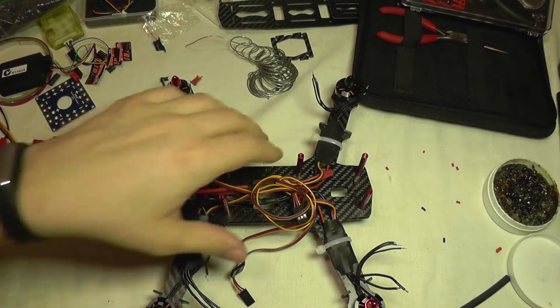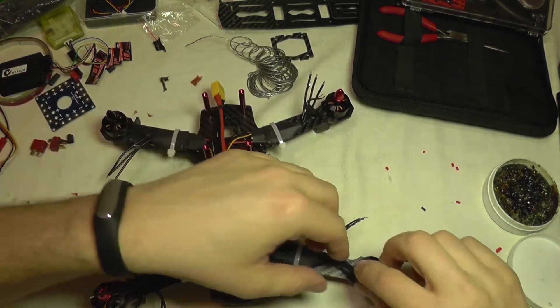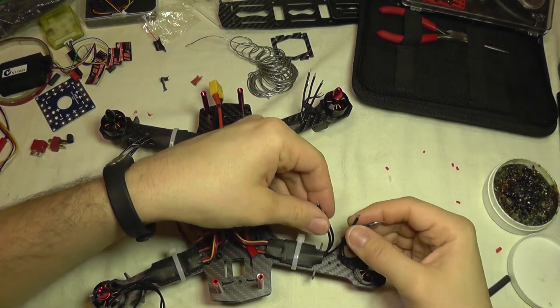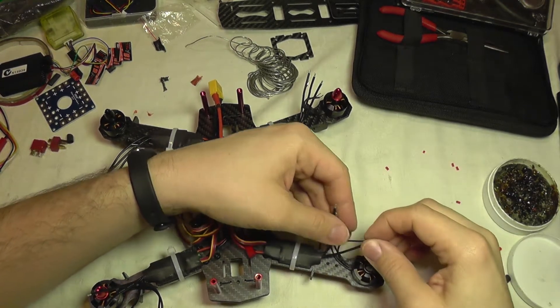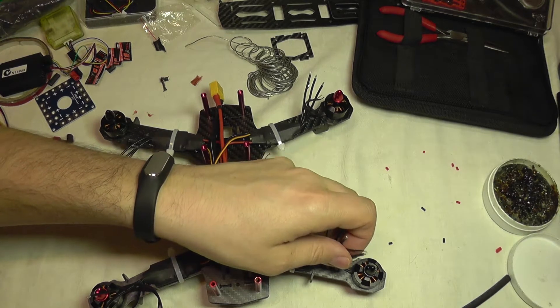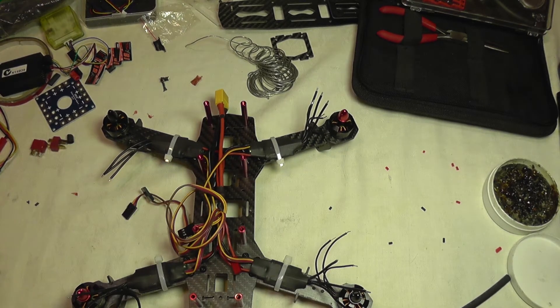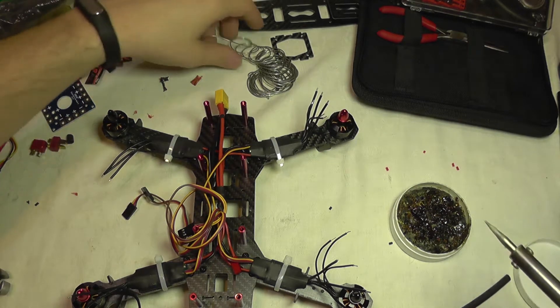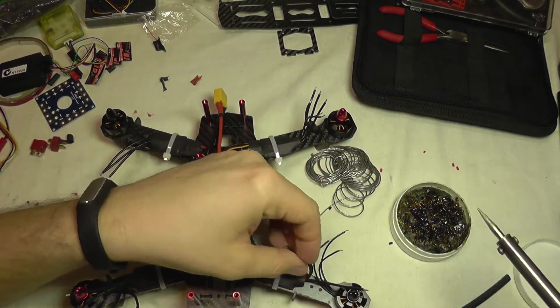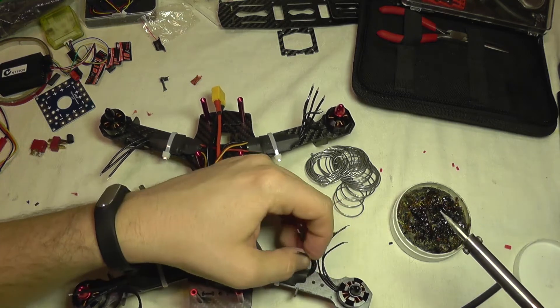Now I'm going to solder the motors to the ESCs. I'm going to do that randomly and I will not heat shrink them yet, as most probably I will need to change the wires for reversing the motor rotation.